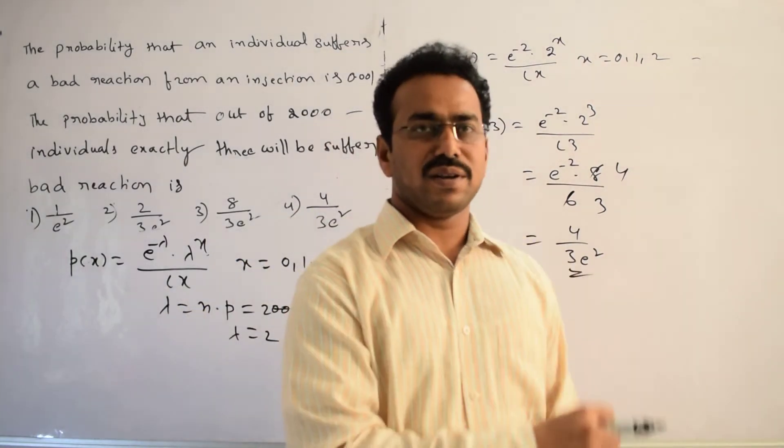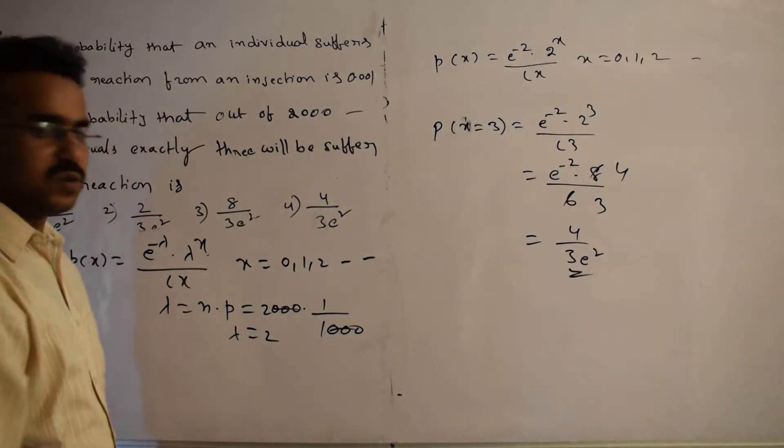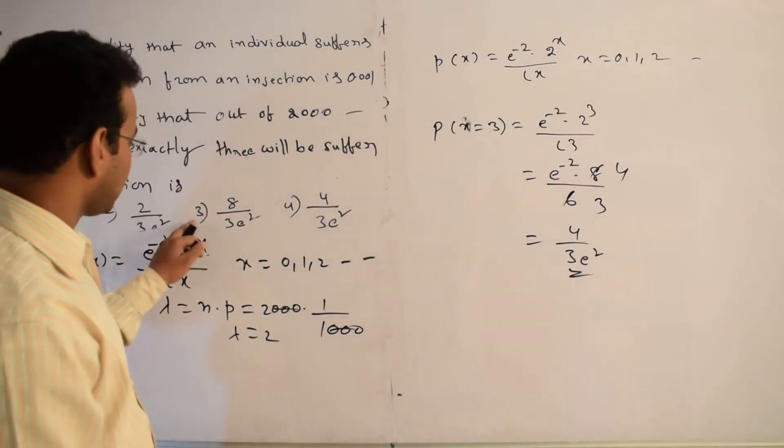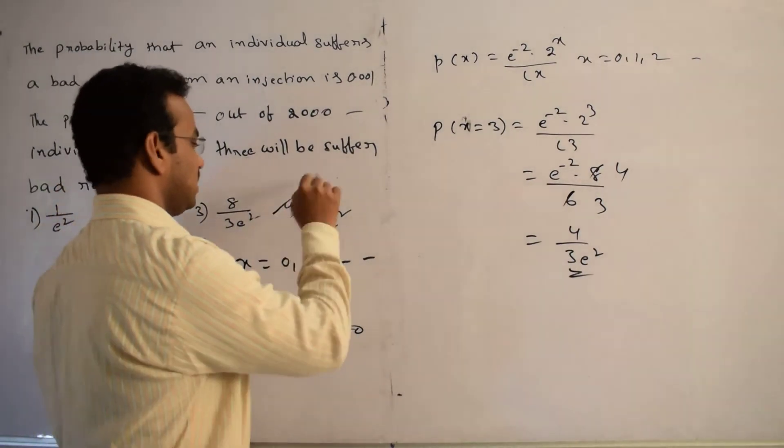Now, we will compare with the given options. What are the given options? 1 by e square - incorrect. 2 by 3 square - also incorrect. 3 - also incorrect. 4: 4 by 3 e square - this is correct. This is the required conclusion.